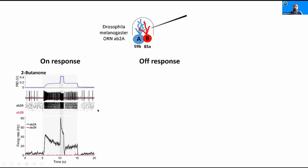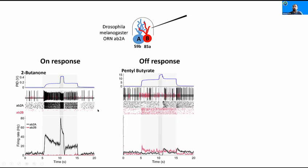On the contrary, off responses are inhibitory responses. In this case, the A-neuron will decrease its activity when pentylbutyrate concentration increases. And when the concentration of pentylbutyrate decreases, this neuron will increase its activity as a post-inhibitory rebound.